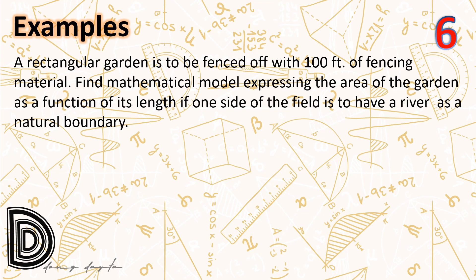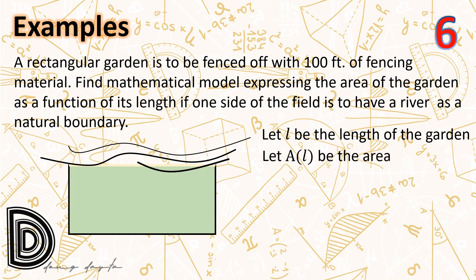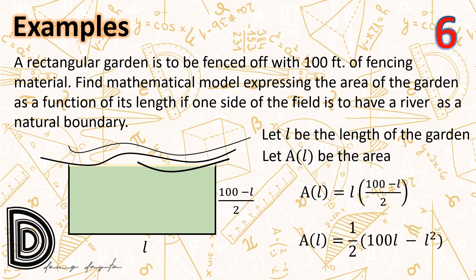A rectangular garden is to be fenced with 100 feet of fencing, with one side using a river as a natural boundary. Let l be the length and A(l) be the area. With 100 feet of fencing for two widths and one length, the width is (100 - l)/2. Therefore A(l) = l · (100 - l)/2, or A(l) = (1/2)(100l - l²).